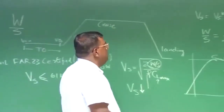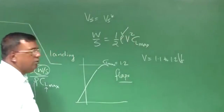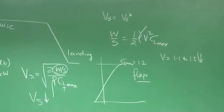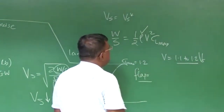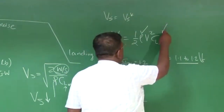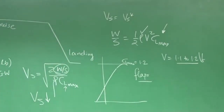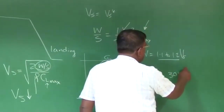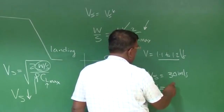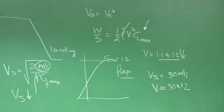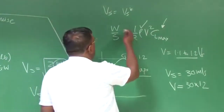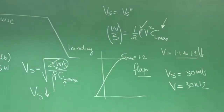Once I know at what altitude I am going to take off — because you can take off from sea level or from a high altitude — V is nothing but 1.1 to 1.2 times V-stall, and what C_L_max you are going to fly at will decide what sort of wing loading you require. For example, if V-stall cannot be more than 30 m/s, then roughly V take-off will be 30 × 1.2. Put that value, the density of air, and the C_L_max value — if it is just a plain wing, maybe around 1.1 to 1.2; if you are using different types of flaps, that will increase C_L_max — and you know what W/S is required for maintaining the take-off conditions.